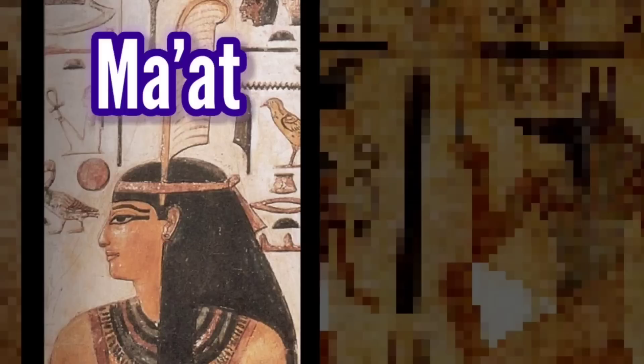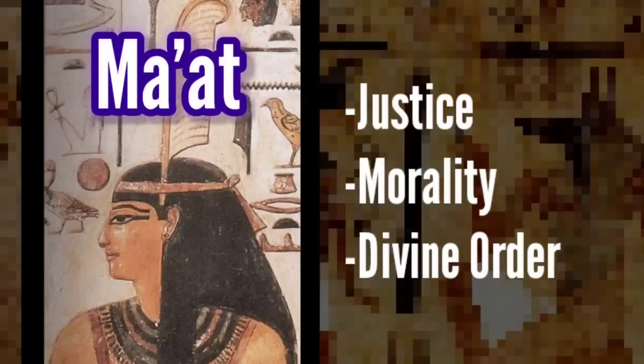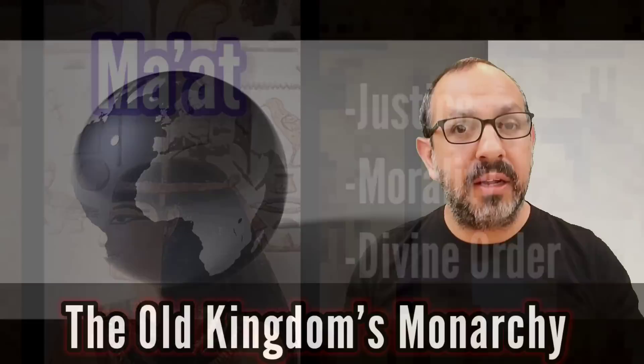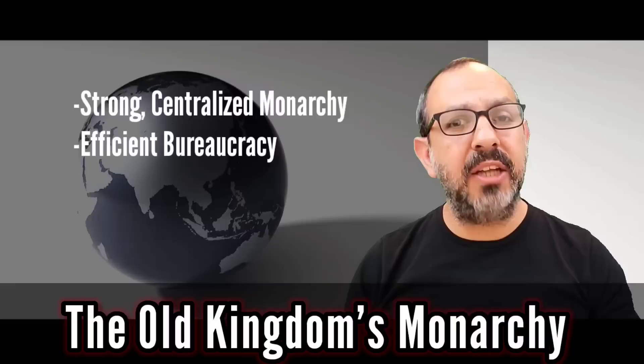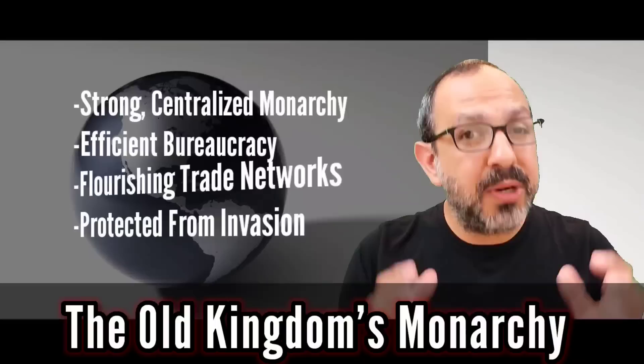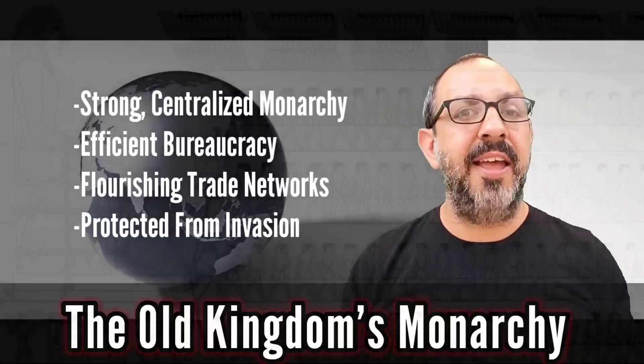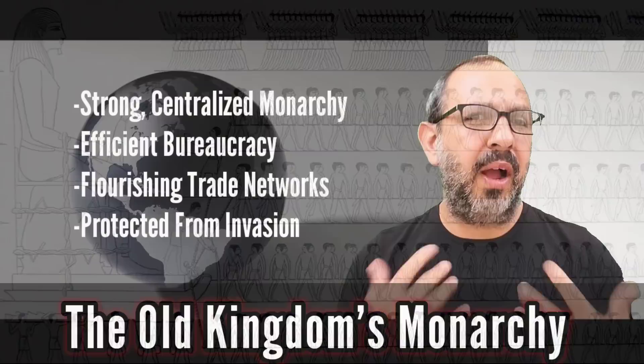Maat was an important concept for Egyptians because it represents justice, morality, and divine order. If Egypt was stable and prosperous, then the pharaoh was believed to be aligned with this idea. Practically speaking, the Old Kingdom flourished because it stabilized a strong centralized monarchy with an efficient bureaucracy. This allowed the kingdom to effectively subdue, tax, and manage the 42 nomes across the country, while maintaining beneficial trade networks and protecting its borders from invasion.